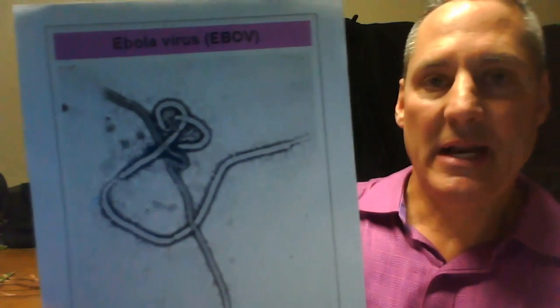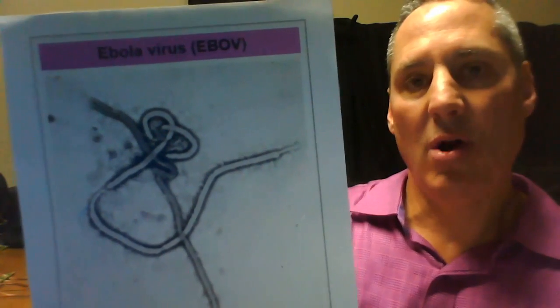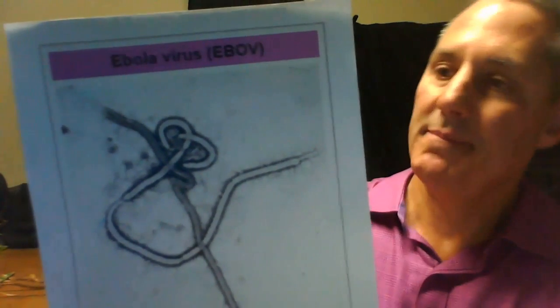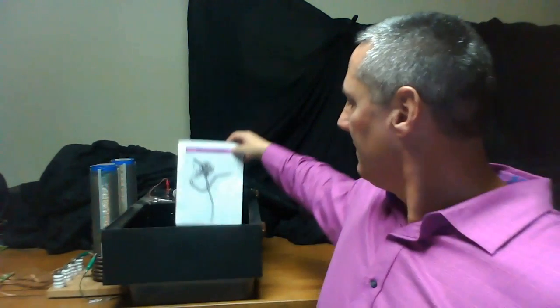Now, in order for me to break down, to disassemble the Ebola virus with the scalar energy instrument, I simply take this photograph and I introduce it into the force field. However, my scalar energy instrument now is deciphering that photograph of the Ebola virus. And in so doing, it can reverse the polarity. It can reverse the phase angle.